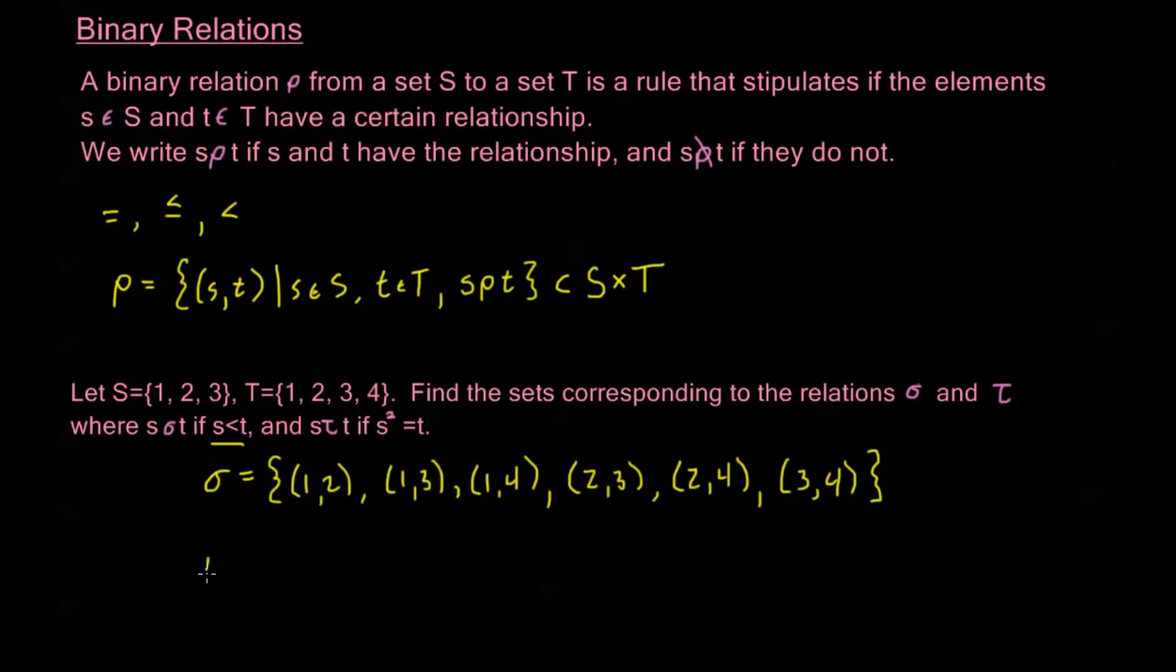Now τ, that's going to be all my ordered pairs (s,t) where s squared is equal to t. Well, we know that 1 squared is equal to 1, so (1,1) is in here. And I have a 2 in my S and a 4 in my T, and I know 2 squared is equal to 4, so (2,4) is in here.